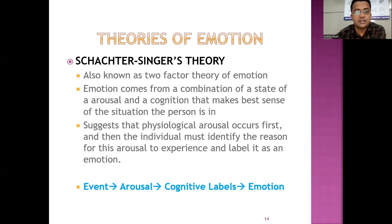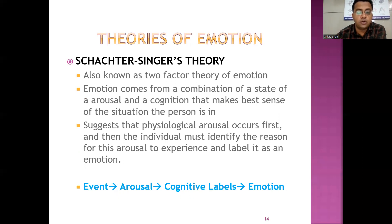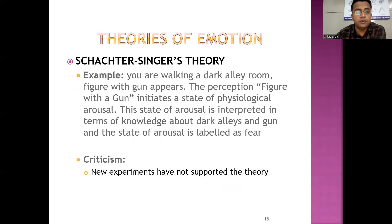The Schachter-Singer theory, also known as the two-factor theory of emotion, states that emotion comes from a combination of a state of arousal and a cognition that makes best sense of the situation. It suggests that physiological arousal occurs first, then the individual must identify the reason for this arousal to experience and label it as an emotion — event occurs, results in arousal, results in cognitive label, resulting in emotion. For example, walking a dark alley, a figure with a gun appears; the perception initiates physiological arousal, which is interpreted in terms of knowledge about dark alleys and guns, and labeled as fear. Criticism: new experiments have not supported this theory.